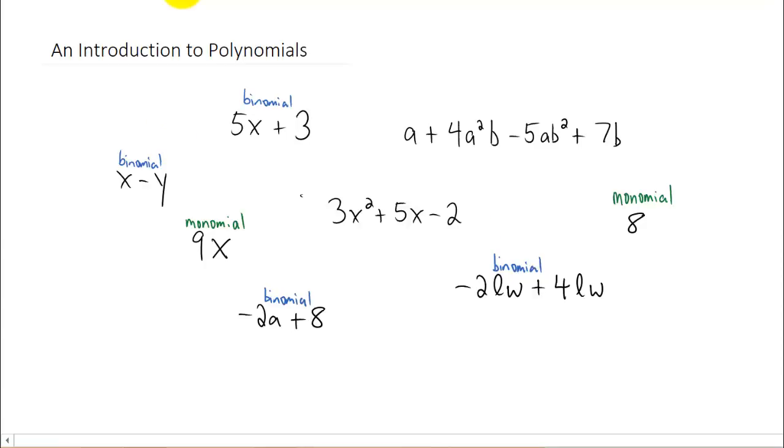You'll notice one polynomial here has three terms, right here, and it's called a trinomial. Tri meaning three, like a tricycle, three wheels.